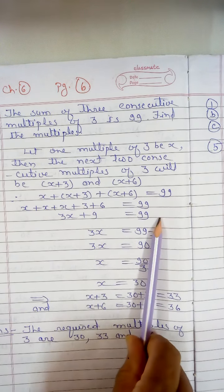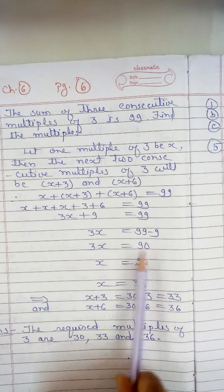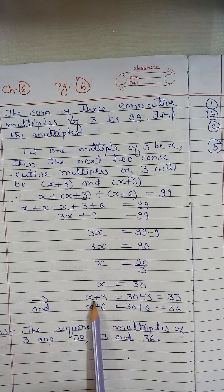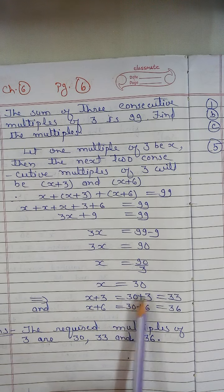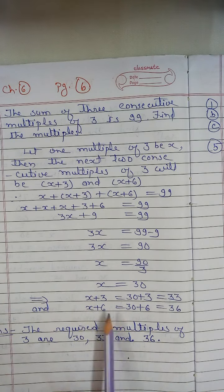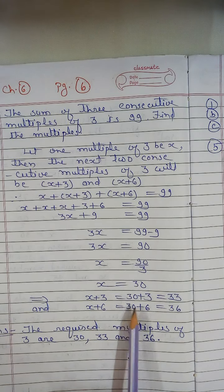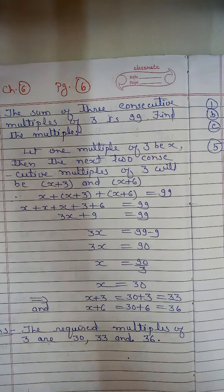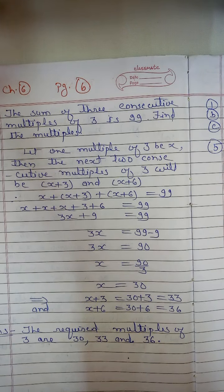This gives us 3x plus 9 equal to 99, and 3x equal to 90, so x equal to 30. The next multiple of 3 will be x plus 3, that is 30 plus 3 equal to 33, and the next multiple will be x plus 6, that is 30 plus 6 equal to 36. So the required multiples of 3 are 30, 33, and 36.